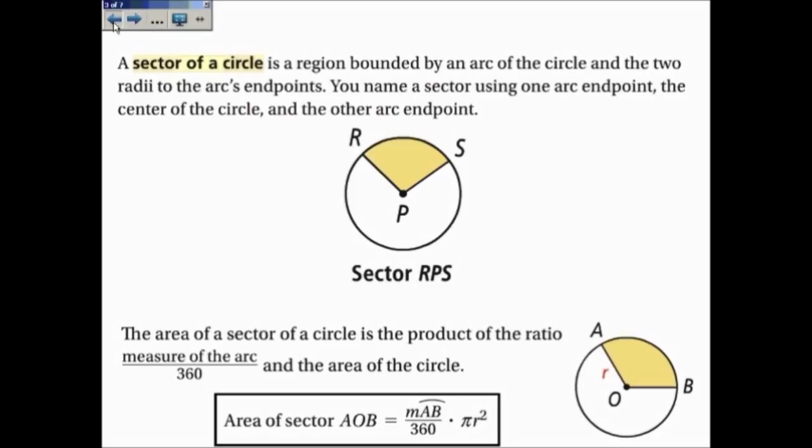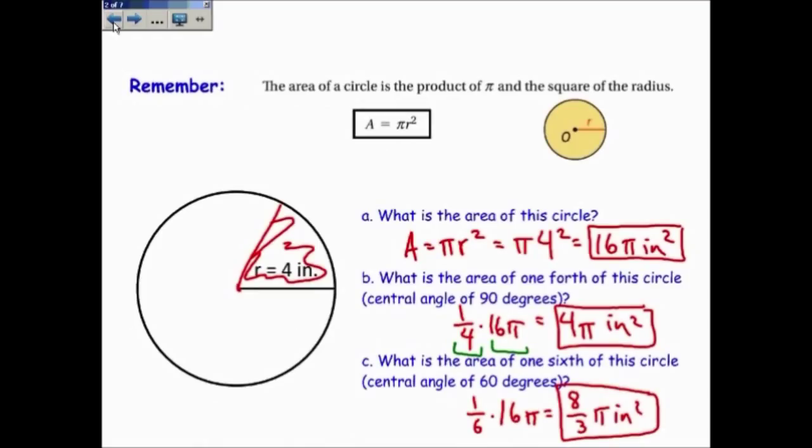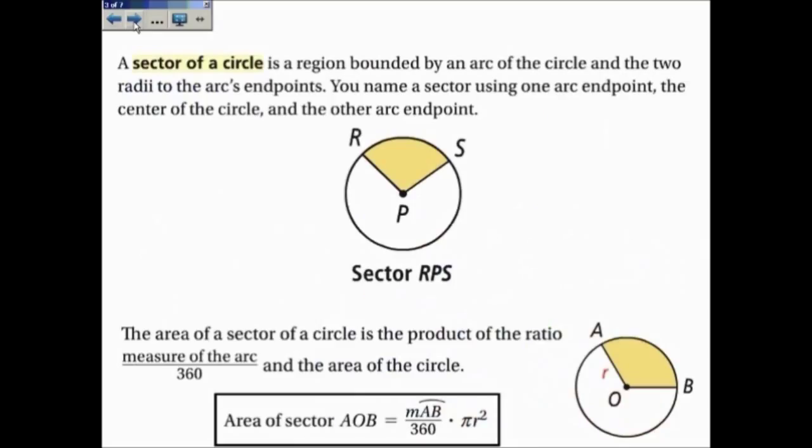Now, alluding to what we talked about before with the fraction times the area of the circle leads us into the formula for finding the area of a sector. This first part is the fraction of the circle that we're going to find the area of, so the fraction of the circle that the sector is. And this is the formula for the area of a circle.